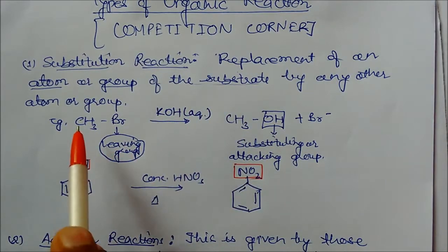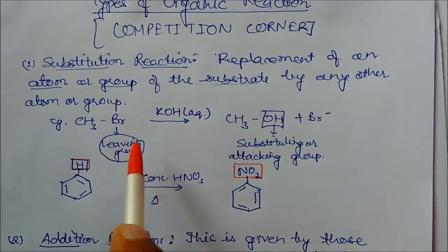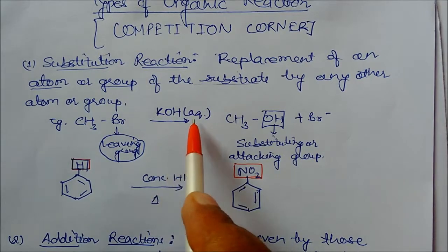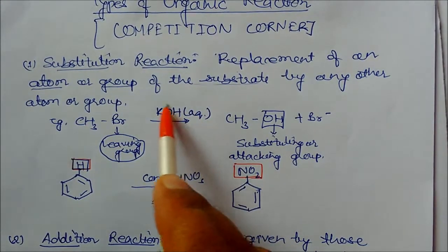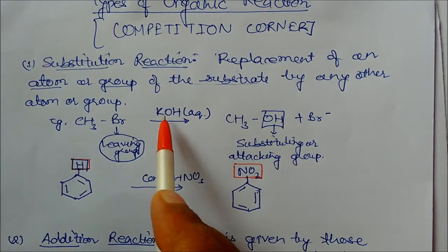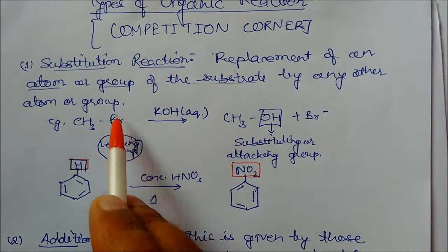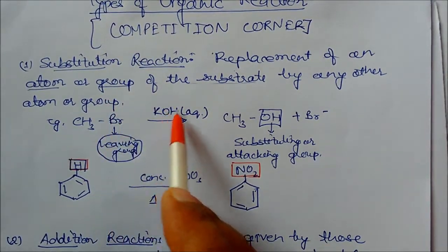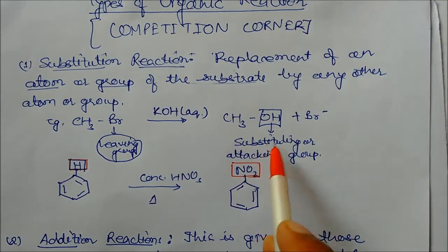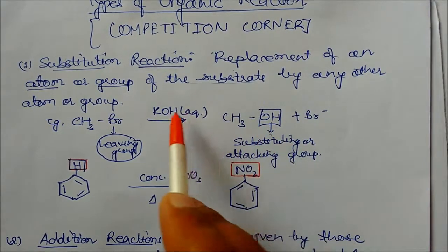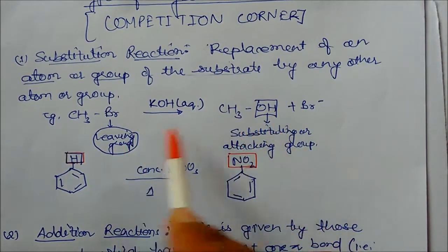For example, CH3-Br (methyl bromide) is reacted in aqueous potassium hydroxide solution. In this base solution, the Br group is replaced by OH. So we get CH3-OH, which is called methanol. The OH is the substituting or attacking group — it attacks and replaces Br, giving methanol. This is a substitution reaction.